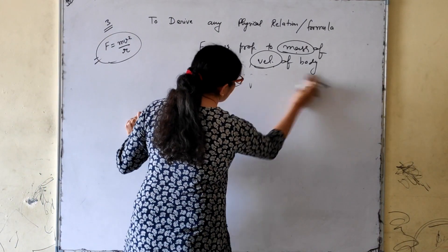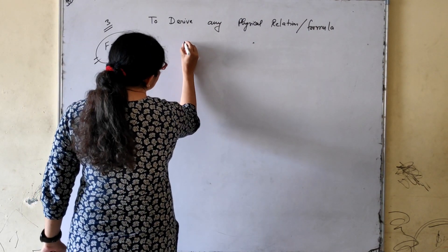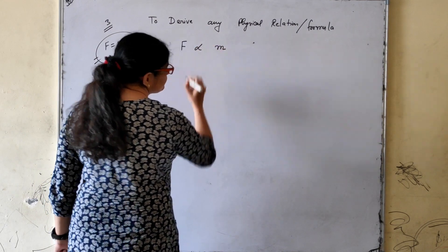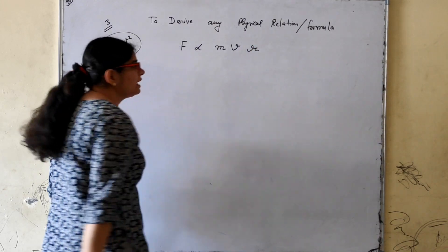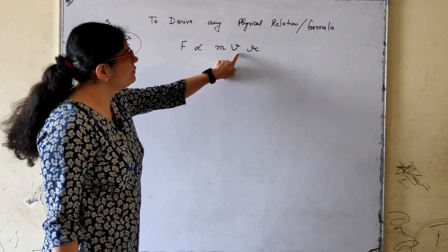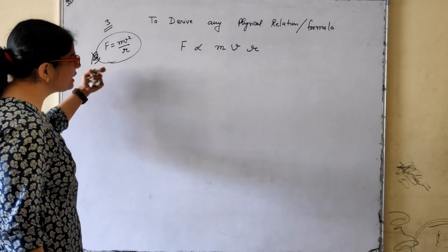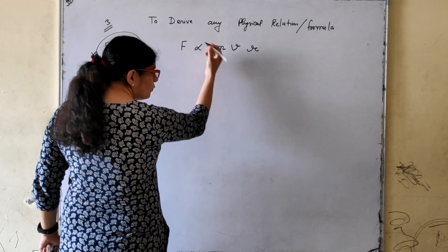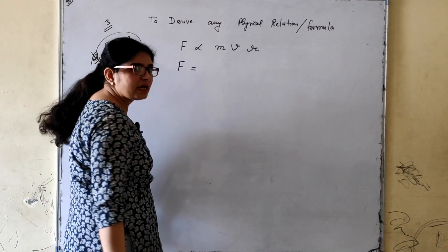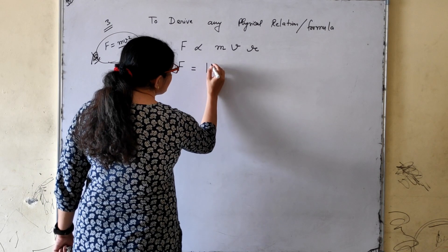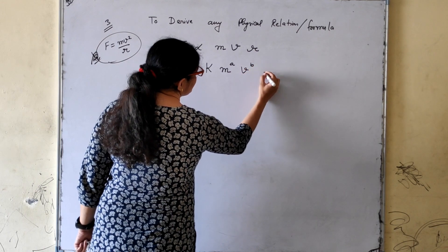Let's start. Since the question says F is proportional to m, v, and r, first we write F is directly proportional to m, v, and r. We don't know this formula yet. So the next step: when we remove the proportional sign, we introduce a constant k. We write F = k · m^a · v^b · r^c, where a, b, and c are unknown powers we need to find.